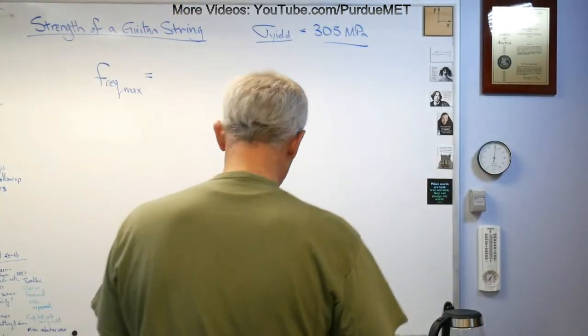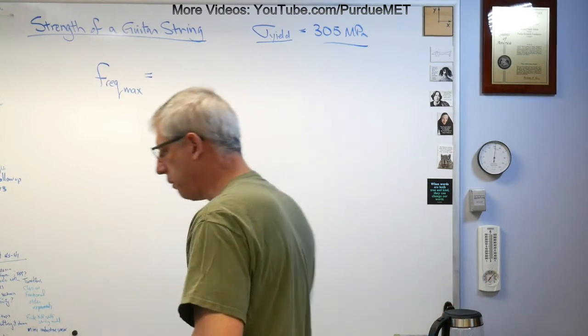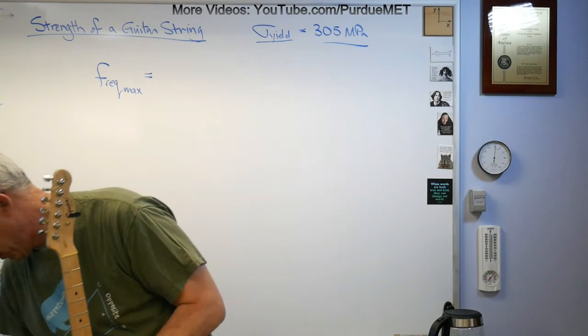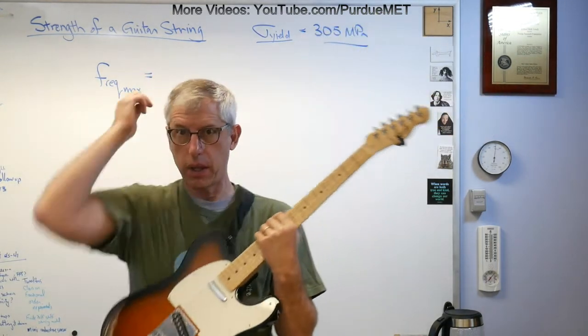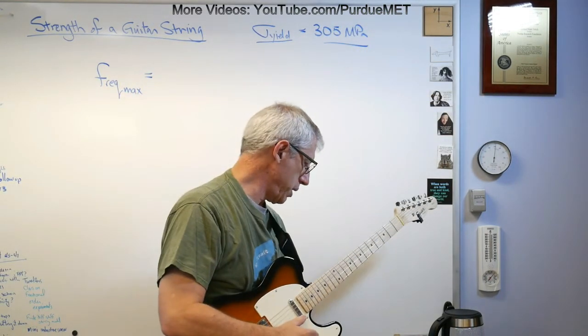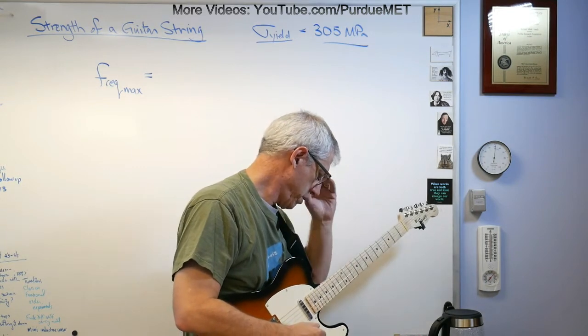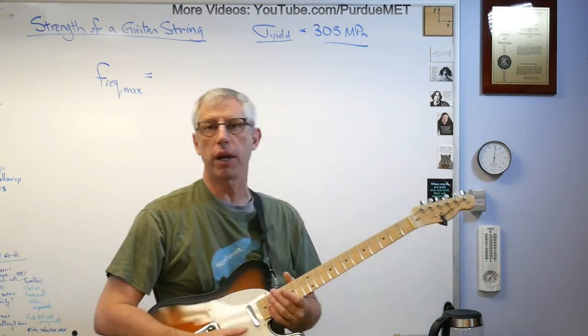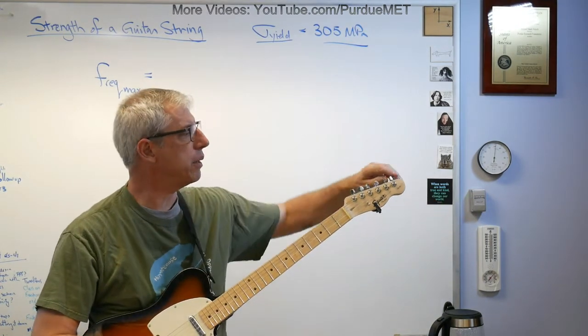It has the advantage that right there it tells me the frequency. Let's flip this on and give me some volume, and I should get about 329 hertz. Yeah, almost exactly right. That's the high E string, 329.